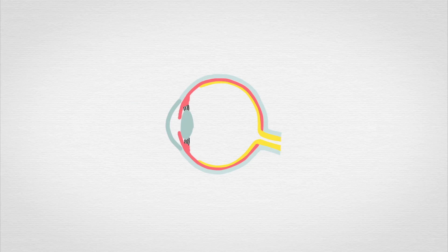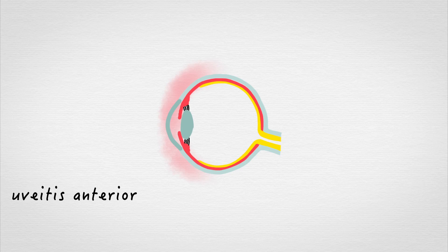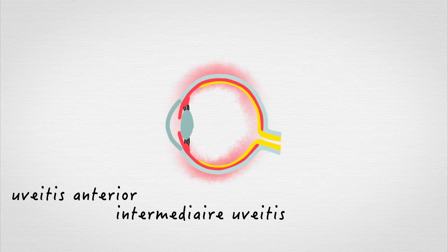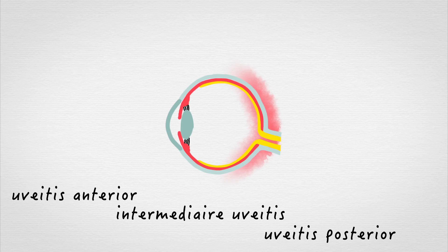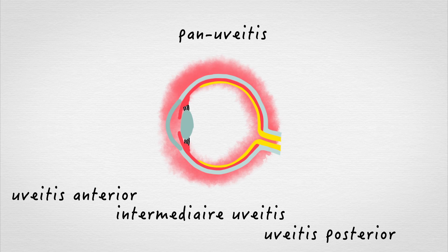There are several forms of uveitis depending on the exact site of the inflammation inside the eye. Uveitis anterior affects the front part of the eye. Intermediate uveitis affects the middle, and uveitis posterior happens at the back. With pan-uveitis, the whole eye is inflamed.